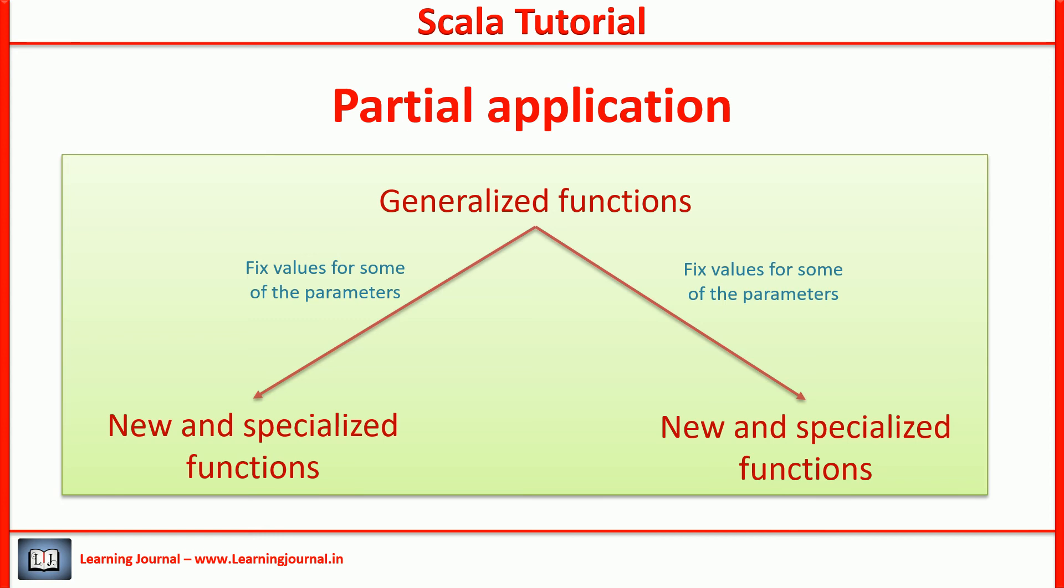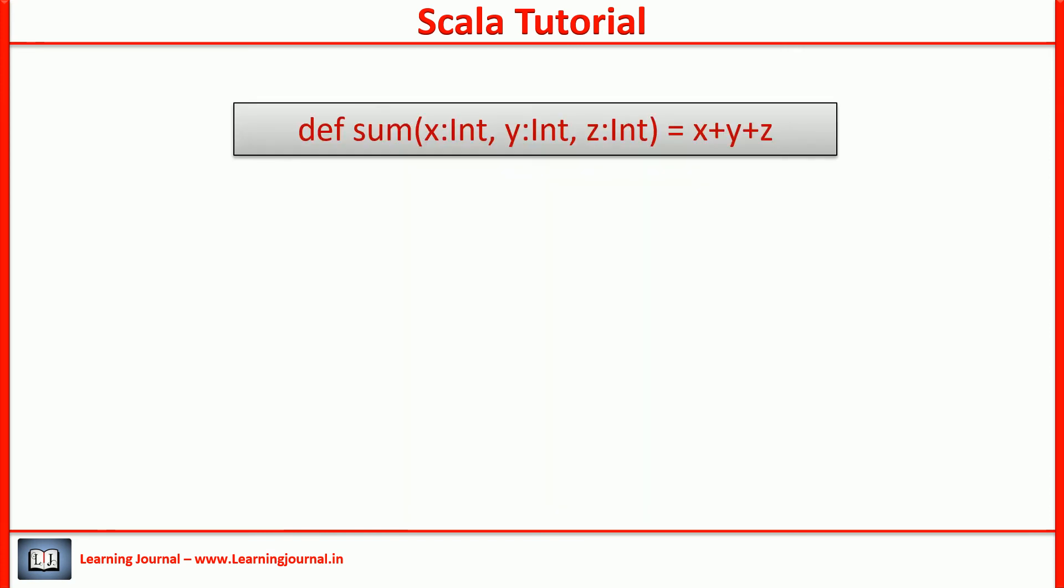The syntactical rules for partially applied functions are straightforward. Use the underscore as a placeholder for unapplied arguments. You must remember to specify data types. The type inference doesn't help here. There is one more minute detail of partially applied function. Let me cover that as well.